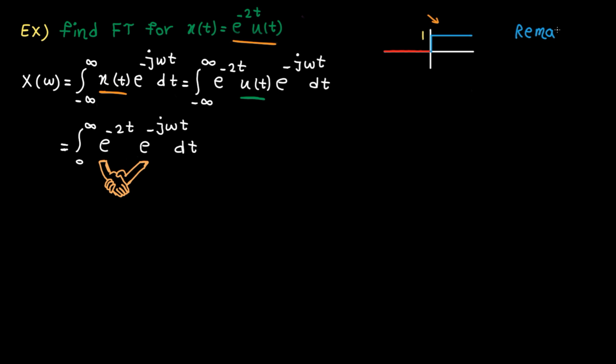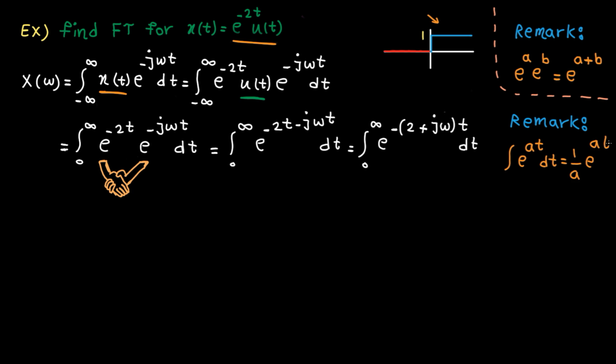Let's combine these two exponential functions and write it as one function. Just in case you forget, e to the power of a multiplied by e to the power of b is equal to e to the power of a plus b. So we get this. Let's factor minus sine and also let's factor t to use this formula again. This is the value for a. Here is the solution.